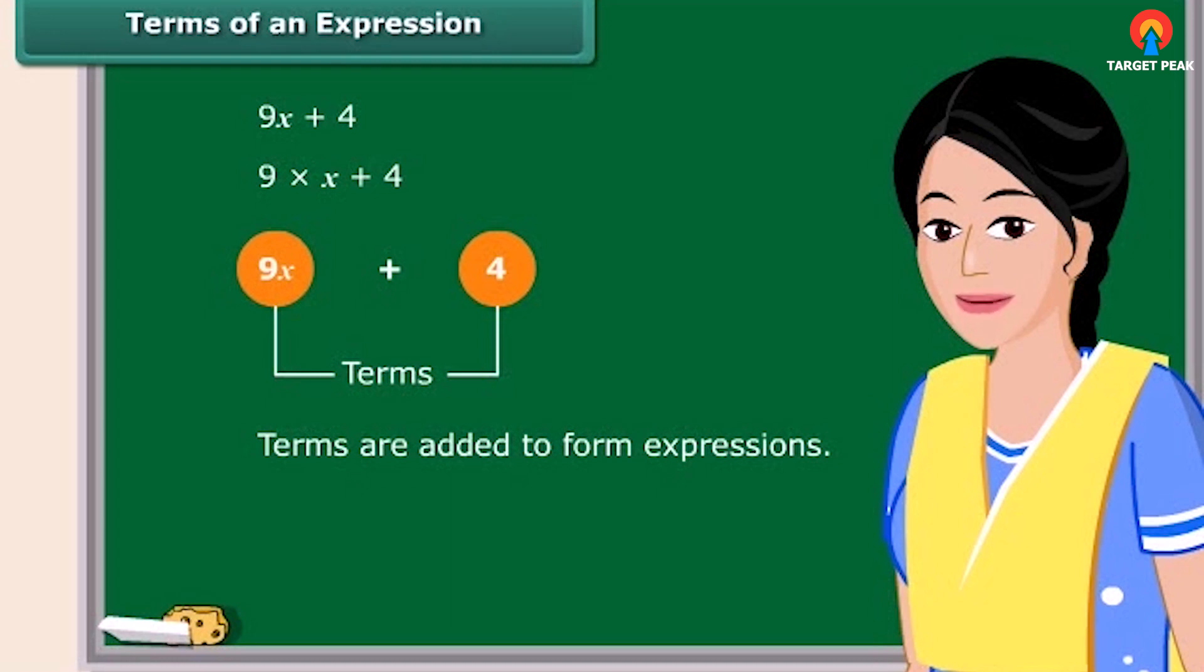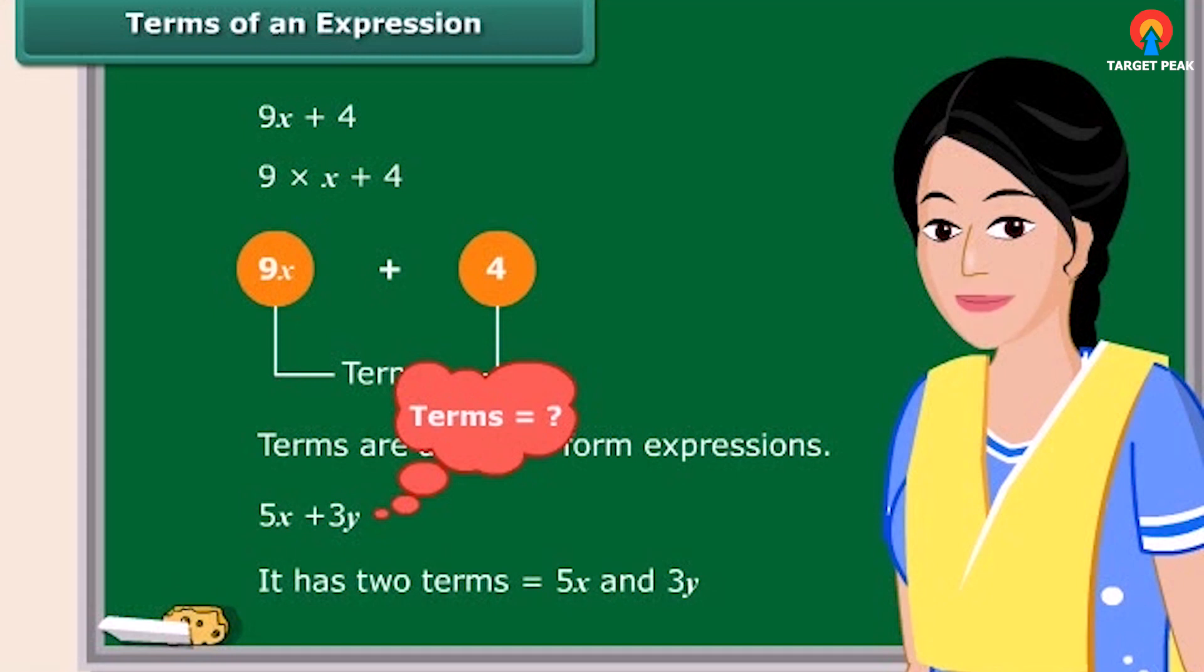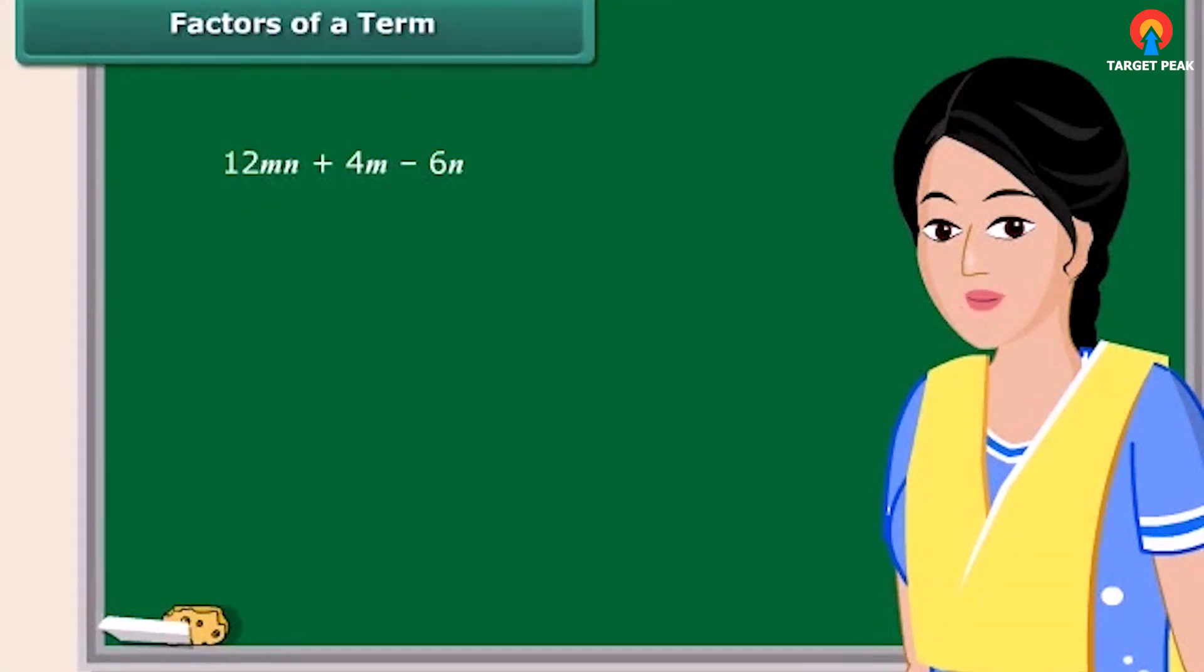How many terms are there in 5X plus 3Y? That's right. It has two terms. A term is a product of its factors. But what are these factors? Look at this term. We say that 3, X and Y are the factors of the term 3XY.